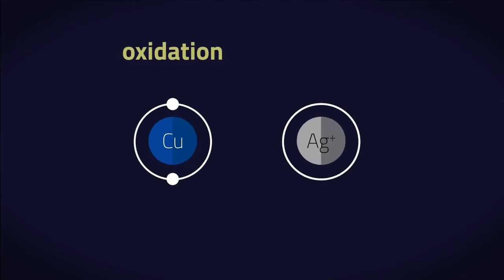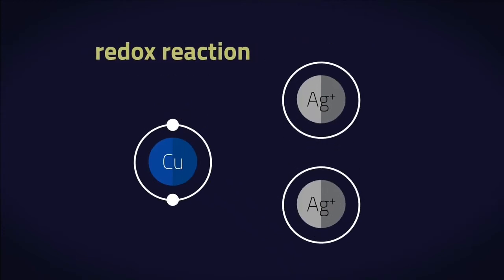Remember that oxidation means the loss of electrons, and reduction means the gain of electrons. So for a redox reaction, electron transfer has to happen with one substance losing electrons and another substance gaining electrons.